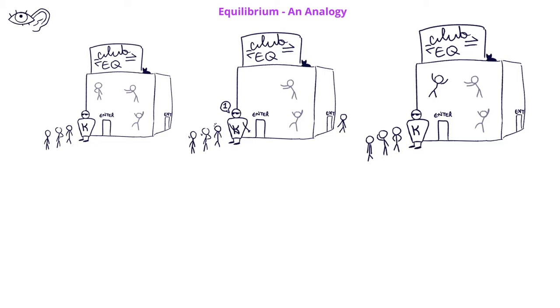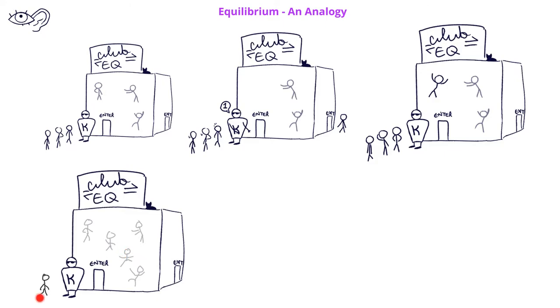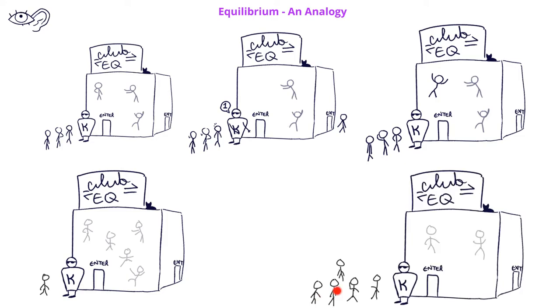dynamic equilibrium does not imply that the concentration of reactants is equal to the concentration of products. We could have some dynamic equilibrium systems in which there are more people inside Club EQ and fewer people outside, or vice versa. If it's a really good club, there might be a lot of people waiting to get in, but since it's a smaller building, fewer people will be inside Club EQ.